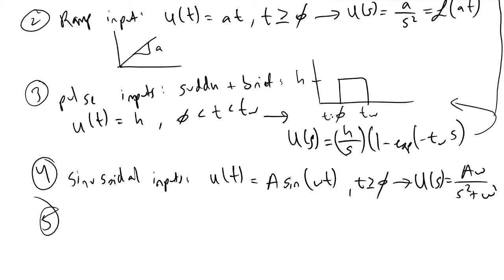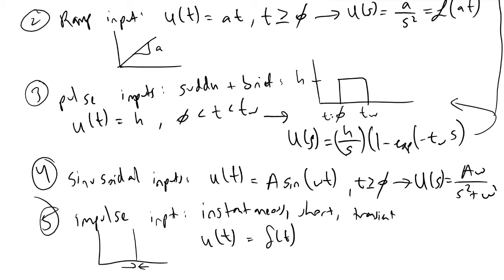Finally, the last type of input we'll consider is referred to as an impulse input. Impulse inputs are instantaneous. They are short, extremely short, and they are transient. They are so short that they are described in the time domain as Dirac delta functions. Dirac delta functions, as we'll recall from quantum mechanics or some other math course, are functions that essentially have no width, but if we integrated them, they would have an area of one in the time domain.